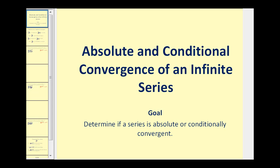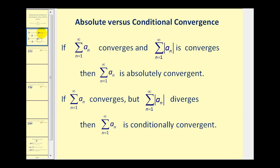Welcome to a lesson on absolute and conditional convergence of an infinite series. If a given series converges and the absolute value of the given series converges, then the given series is absolutely convergent. However, if the given series converges but the absolute value of the given series diverges, then the series is conditionally convergent.